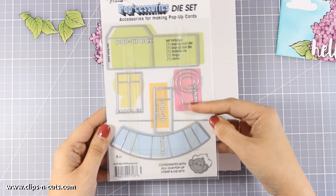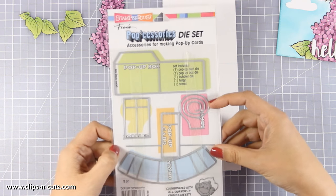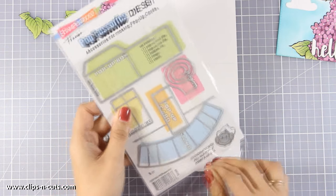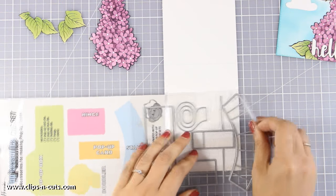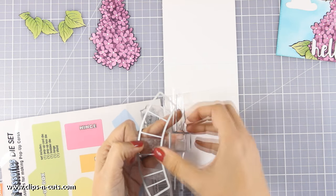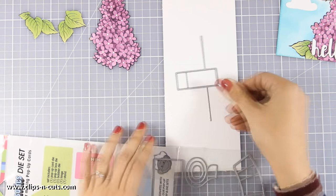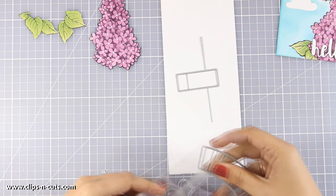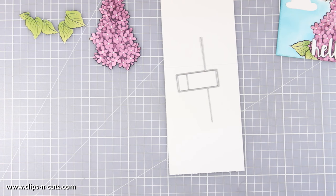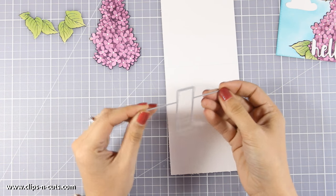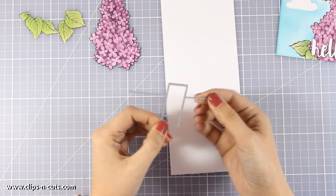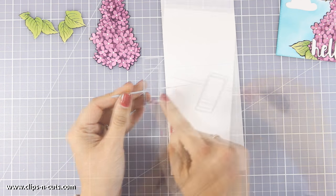Because I am going to use one die from this PopSessories fan die set that has many elements and I am going to link you down below to a video that shows you how you can use each and one of those elements. I am going with the simplest one and the most basic one which is going to create a base for sticking my pop-up elements. So this is not going to cut out all the way. Those things that stick out, those lines are actually for folding only.